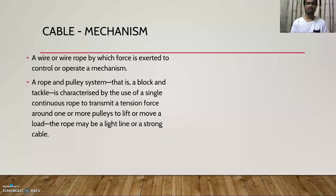Cable mechanism. In cable mechanism, the basic and important part is wire or wire rope. A wire or wire rope is used to exert force to control or operate a cable mechanism. In a rope and pulley system, i.e. a block and tackle, it is characterized by the use of a single continuous rope to transmit tension around one or more pulleys. If it is used to lift or move a load, the rope may be light or a strong cable.